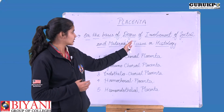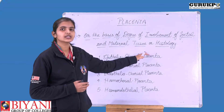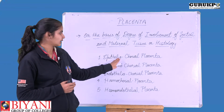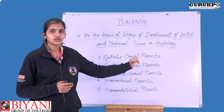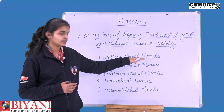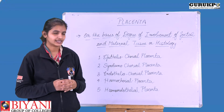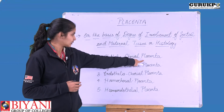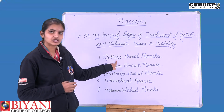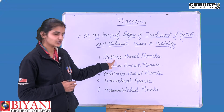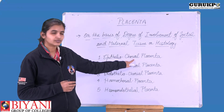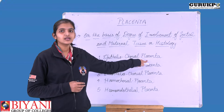This classification is called degree of involvement of fetal and maternal tissue, also called histology. We have divided it into 5 types. Number one is epitheliochorial placenta. In this case, the epithelial layer is the maternal tissue from the mother's uterus, and the chorial layer is the fetal tissue. So the whole name is epitheliochorial placenta.